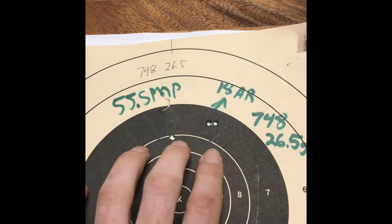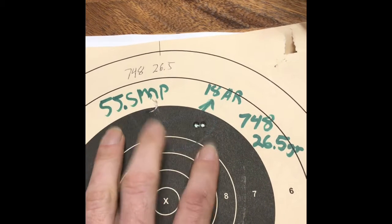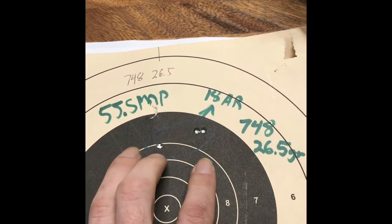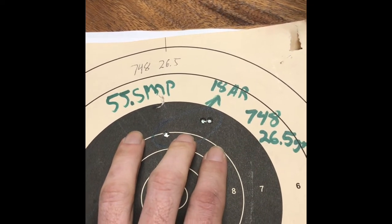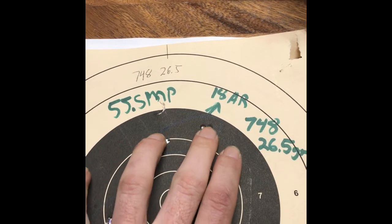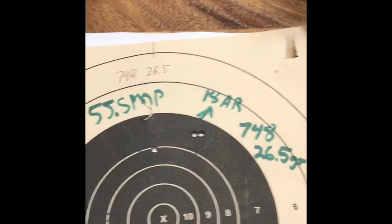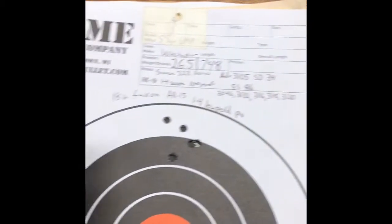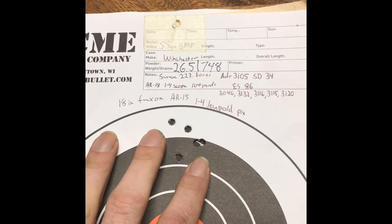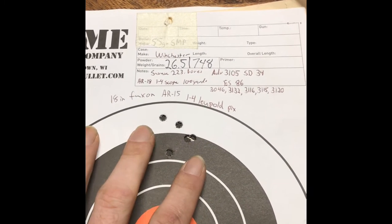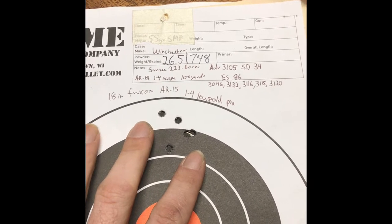For the 18 inch barreled AR, I wasn't mainly seeing for accuracy of this rifle at the time. I just wanted to shoot it a couple of times over the chronograph to see what the velocity was. And I was very impressed with them too. I wasn't really aiming at all. So I took that rifle back out again at a later date, and this is what it grouped like. And it was with a 1-4 scope, about 100 yards.